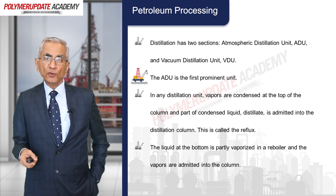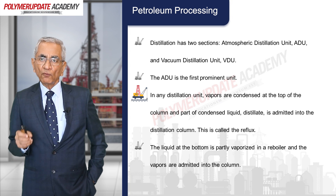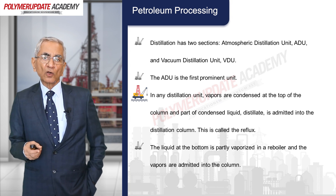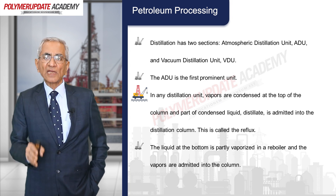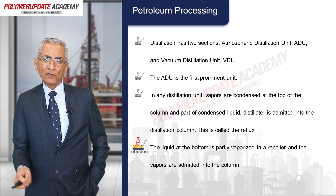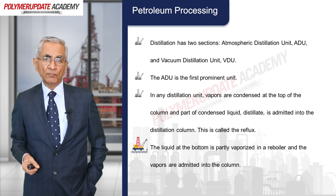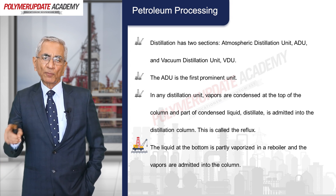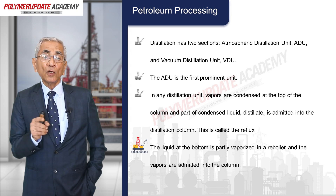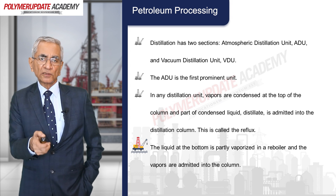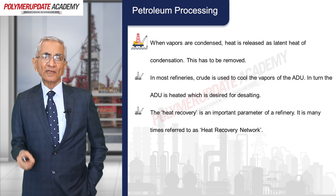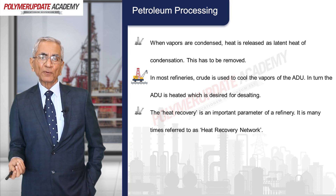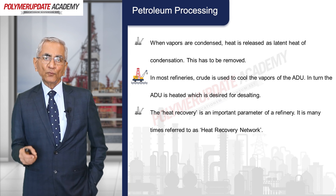Distillation has two sections: the atmospheric distillation unit (ADU) and the vacuum distillation unit (VDU). The ADU is the first prominent unit. Vapors are condensed at the top of the column, and part of the condensed liquid distillate is admitted back into the column — this is called reflux, which helps maintain the stability of the column. The liquid at the bottom is partly vaporized in the reboiler and the vapors are admitted back into the column.